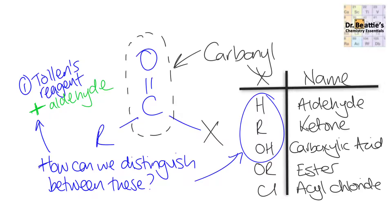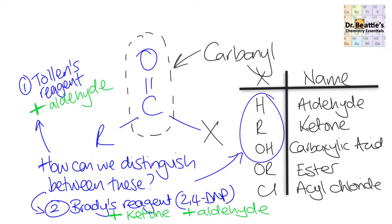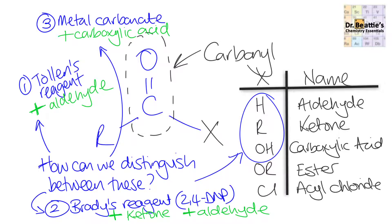The tests we'll look at are: Tollens reagent, which only gives a positive result for aldehydes; Brady's reagent, otherwise known as 2,4-DNP, which gives a positive result for both ketones and aldehydes; and finally, adding a metal carbonate to a carbonyl, which only gives a positive result if a carboxylic acid is present. We'll now look at each of these tests and see how they work.